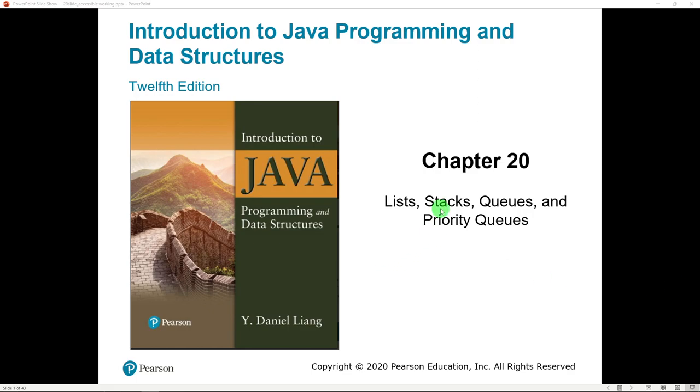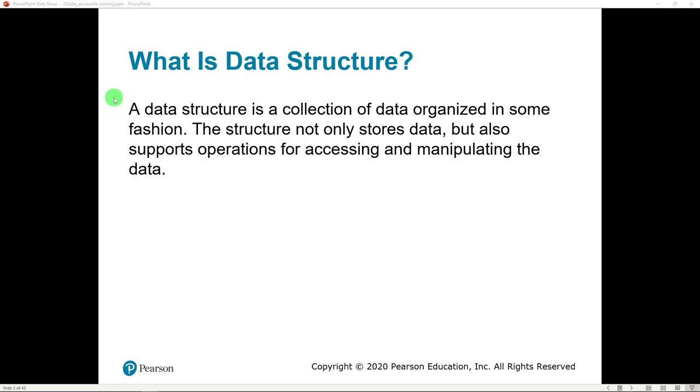In this chapter we're going to look at lists, stacks, queues, and priority queues. All of these things fall into the second half of the subtitle of the book - they are data structures.